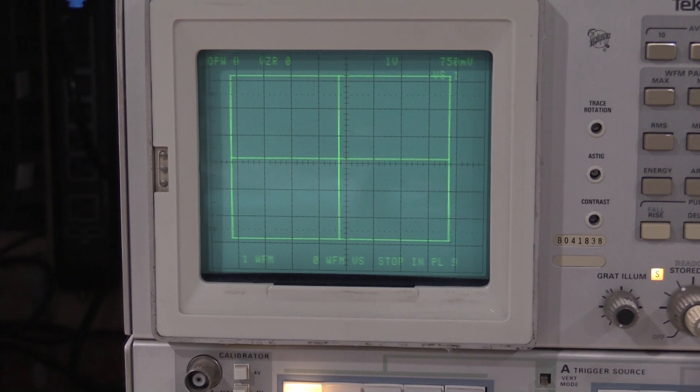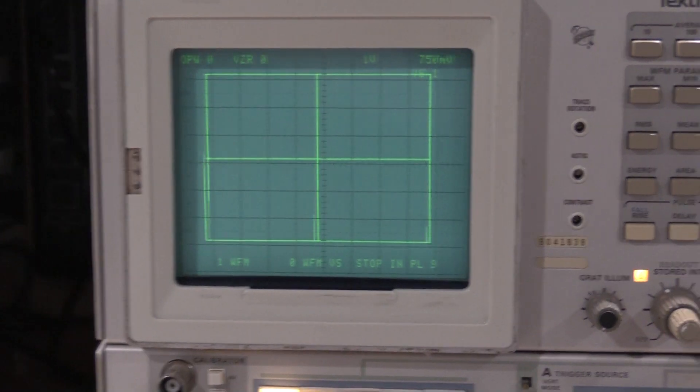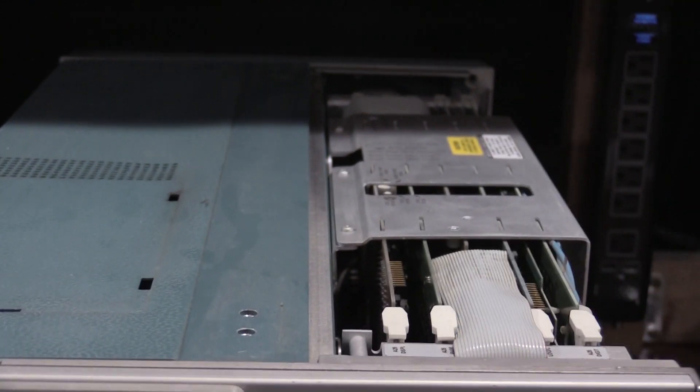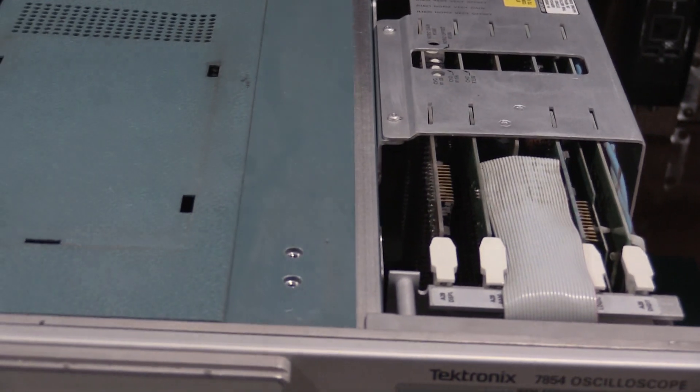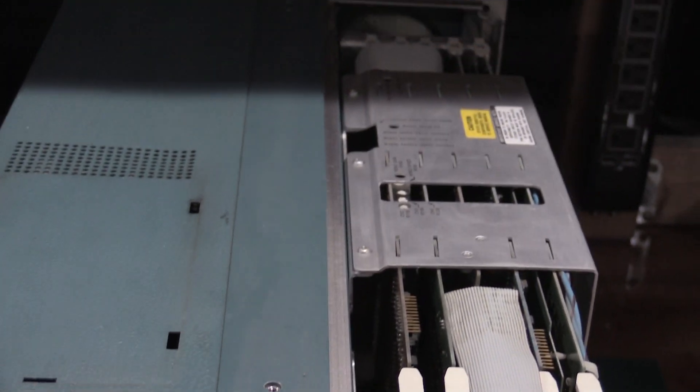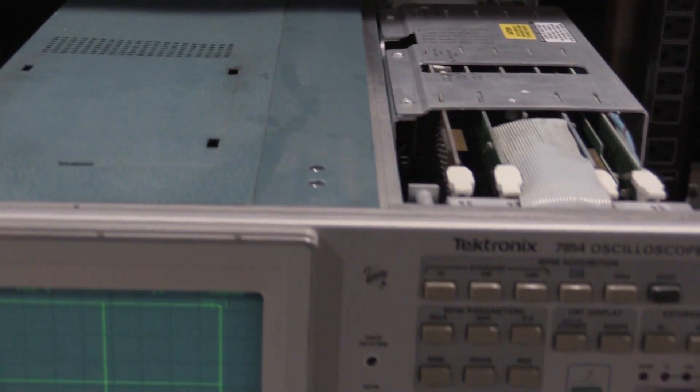So I will get a tuning tool, sorry about the wobbly camera. The adjustments are these pots right at the top of the display board. This is the A29 board, the one that is closest to the frame.